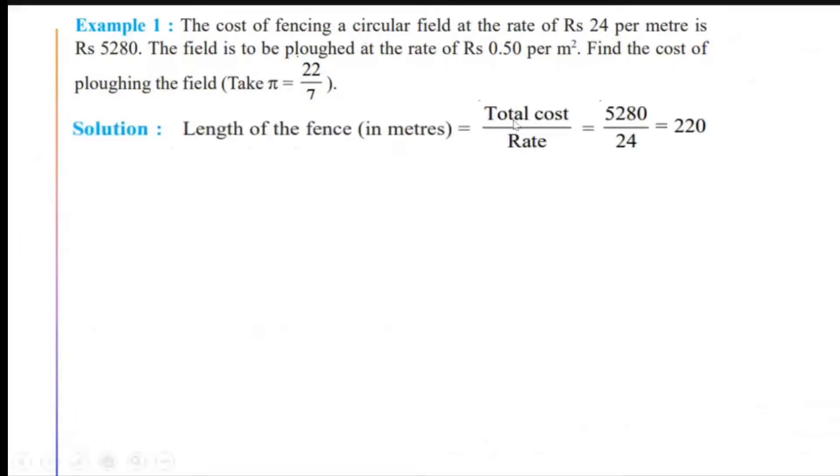The length of the fence will be equal to the total cost upon the rate per meter. So that is equal to Rs 5280 divided by Rs 24, which equals 220. So the length in meters comes out to be 220. This length of the fence is equal to the circumference of the circular field.